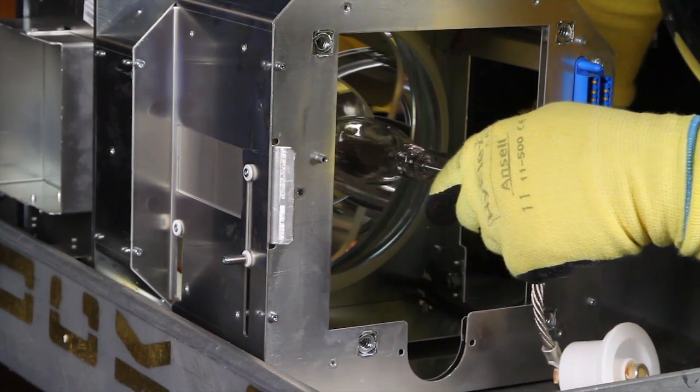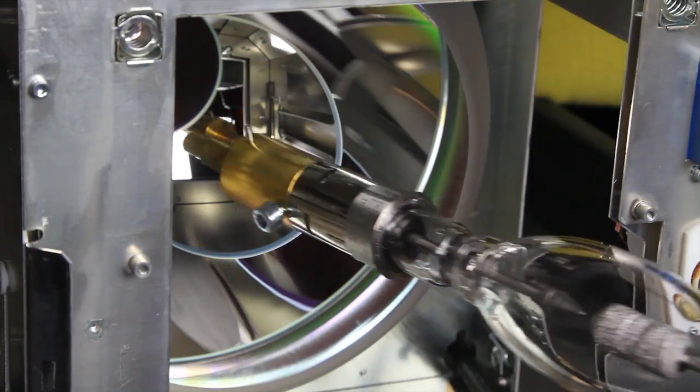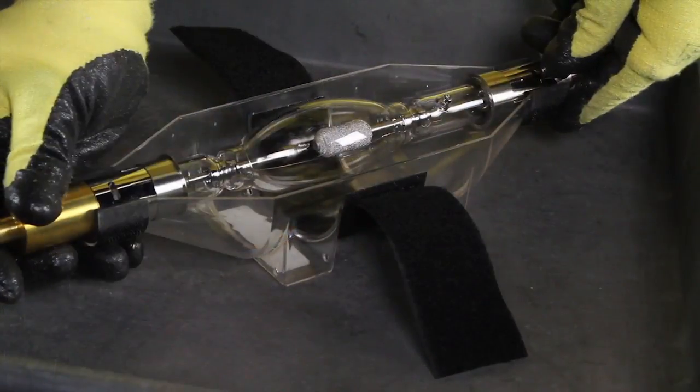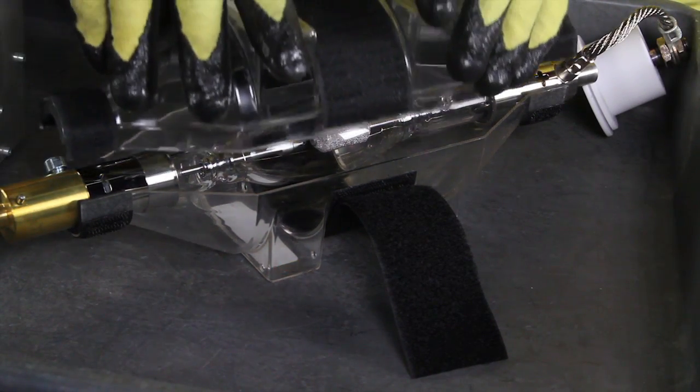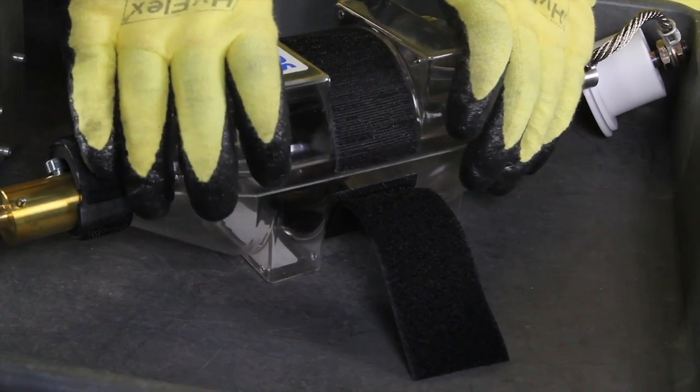Remove the lamp by sliding it straight out, being careful not to touch the reflector. Place the old lamp into its original protective carrier and secure with Velcro straps.